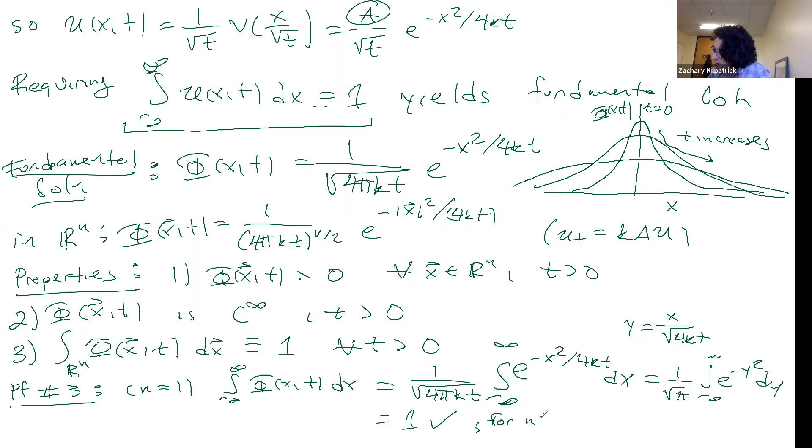For N greater than 1, we can just use the fact that e to the minus magnitude of Y squared is equal to e to the minus Y1 squared, e to the minus Y2 squared, and so on, e to the minus Yn squared.